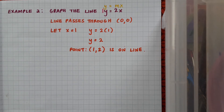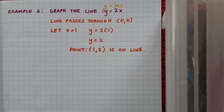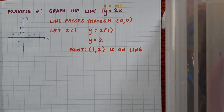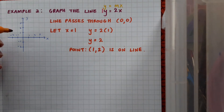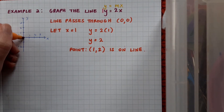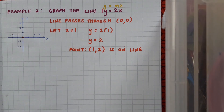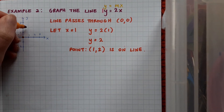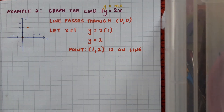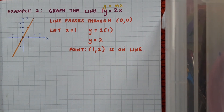Draw the graph now yourself and pause the video while you do it. With my xy plane drawn, I'll mark my points in. I know it goes through the origin (0, 0), and then I'll mark in the point (1, 2): out to 1 and up to 2. And when I join my points together, this is what the line looks like.